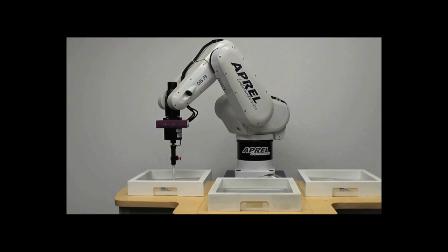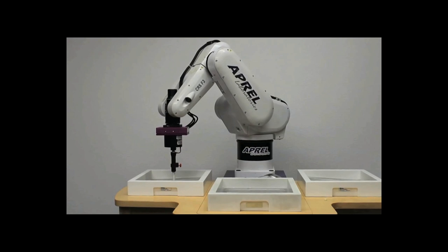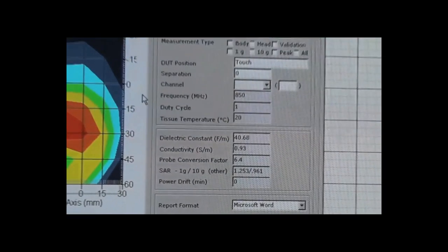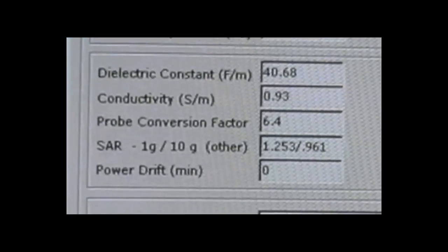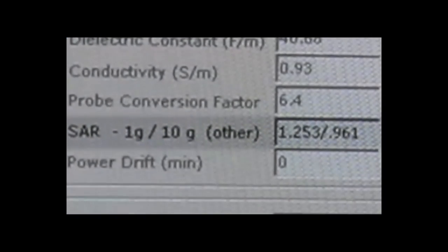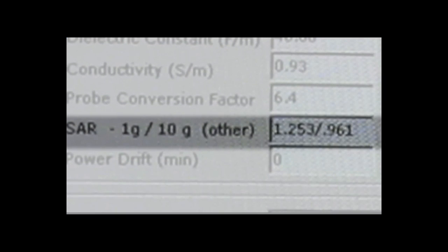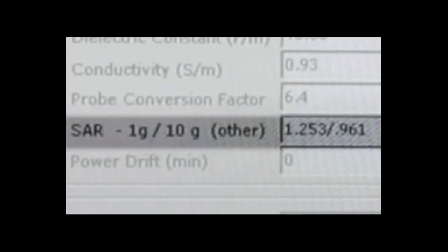What the machine is doing is measuring the amount of radiation emitted by the phone that is penetrating the simulated head. And as you can see, under normal circumstances, without an R2L on the iPhone 5, the sensor is showing that 1.253 watts per kilogram of cell phone radiation is absorbed at 1 gram density of brain matter.